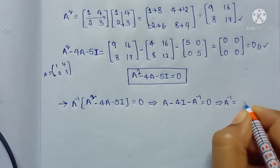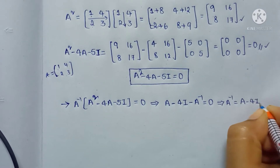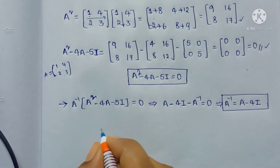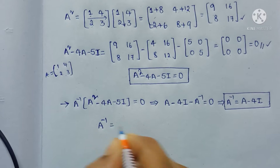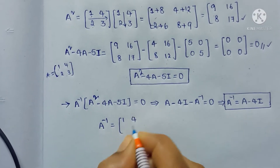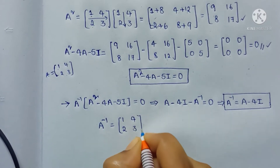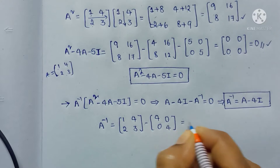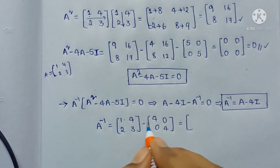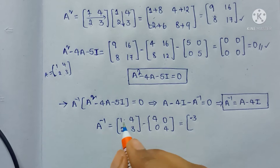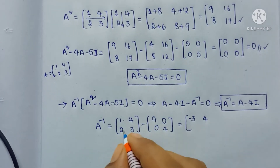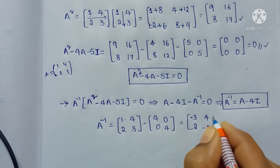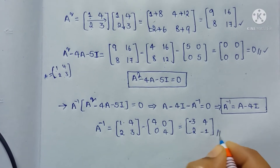A inverse is equal to A minus 4I. Now the A matrix is [1, 4; 2, 3] minus 4I, which is [4, 0; 0, 4]. Here we get A inverse matrix: 1 minus 4 gives minus 3, and 4 minus 0 gives 4, and 2 minus 0 gives 2, and 3 minus 4 gives minus 1. This is the A inverse matrix.